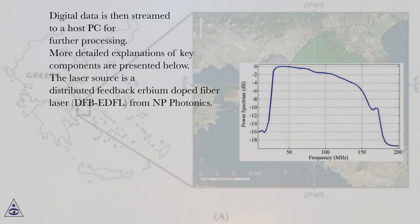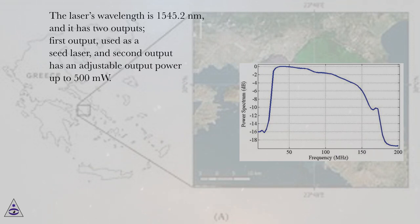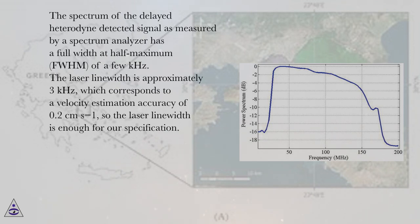The laser source is a distributed feedback Erbium-doped fiber laser (DFB-EDFL) from NP Photonics. The laser's wavelength is 1545.2 nm, and it has two outputs: the first output is used as a seed laser, and the second output has an adjustable output power up to 500 mW. The spectrum of the delayed heterodyne detected signal as measured by a spectrum analyzer has a full width at half maximum (FWHM) of a few kHz. The laser linewidth is approximately 3 kHz, which corresponds to a velocity estimation accuracy of 0.2 cm s⁻¹, so the laser linewidth is sufficient for our specification.